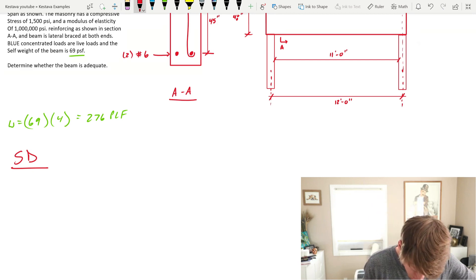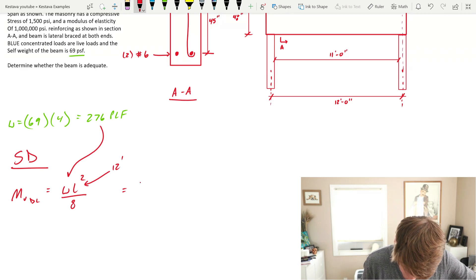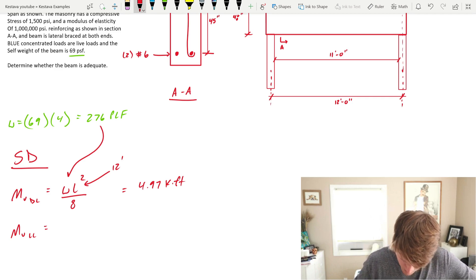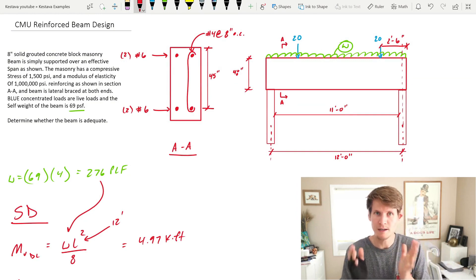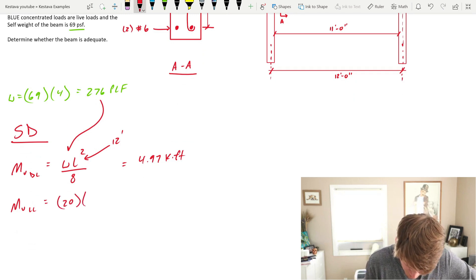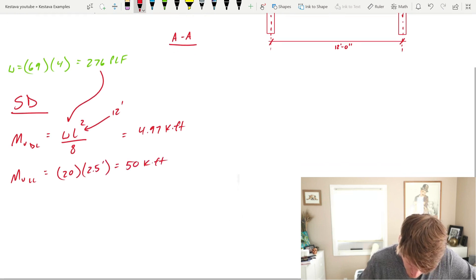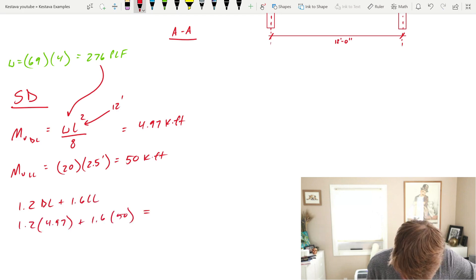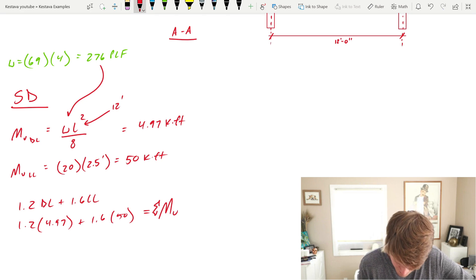First thing we're going to do is get our moments, and I'm going to split them up between the moment induced by the self-weight and the moment induced by the live loads. MU dead load is equal to WL squared over eight. That gets us 4.97 kip-feet. And then MU live load. I pulled the equation from the AISC steel manual in the load tables that they provide there, where you have a point load, two symmetric point loads symmetrically placed on a simply supported beam. That's what we have. So that gets you a live load of just P times the distance to your simple support, which is 2.5 feet. And then since we're doing strength design, we know that we need to factor our loads. And for masonry, it's 1.2 dead load plus 1.6 live load. That spits out a summation of moment ultimate equal to, we're going to round off, 86 kip-feet. There's our demand right there.